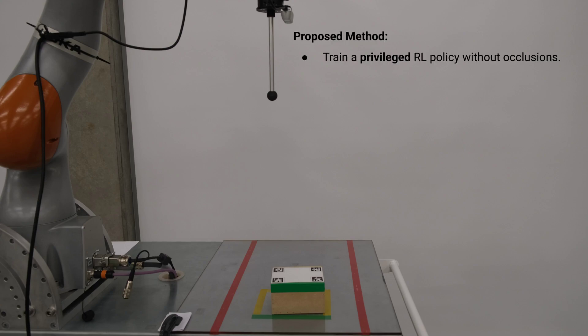We first train a privileged policy using reinforcement learning in a simulated environment without occlusions. By rolling out a wide range of optimal and suboptimal checkpoints from this policy in simulation, we are able to collect highly diverse interaction data that reflects distinct control behaviors and environment dynamics.